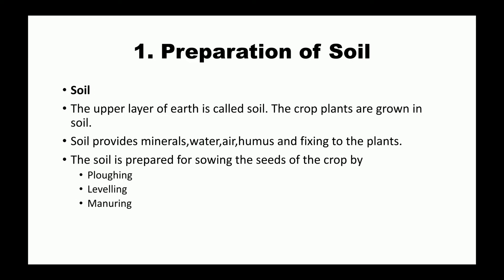First of all, preparation of soil. The upper layer of earth is called soil. Crop plants are grown in soil, and the soil provides minerals, water, air, humus and anchorage to the plants. The soil is prepared for sowing the seed of a crop by plowing, leveling, and manuring.